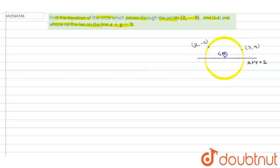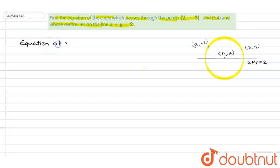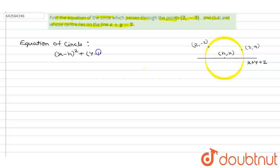Let's suppose the centre of this circle is (h, k). The equation of a circle is given by the formula: x minus h whole square plus y minus k whole square is equal to r square, where h and k is the centre of the circle and r is the radius.